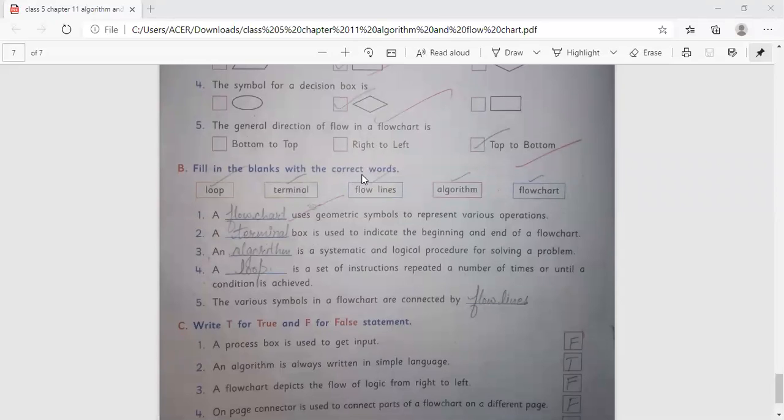Fill in the blanks with correct words. A flowchart uses geometric symbols to represent various operations. A terminal box is used to indicate the beginning and end of a flowchart. An algorithm is the systematic and logical procedure for solving a problem. A loop is the set of instructions repeated a number of times or until a condition is achieved. The various symbols in a flowchart are connected by flow lines.